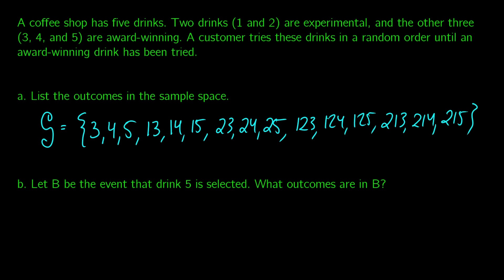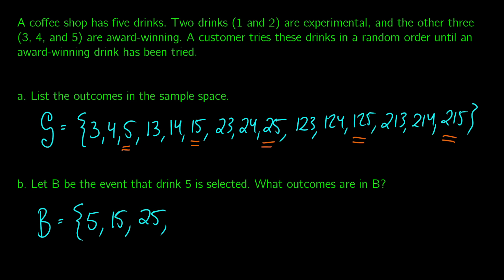Now we define event B as the event that drink five is selected. Looking at the sample space, we find any outcome containing a five. So the event B that drink five is selected is: {5}, {1,5}, {2,5}, {1,2,5}, {2,1,5}.